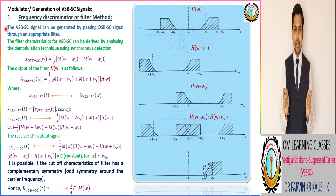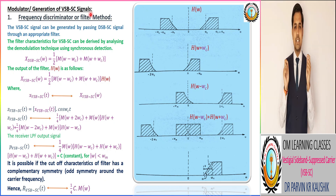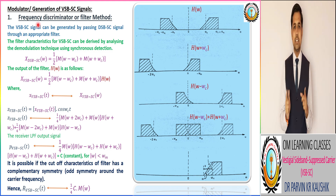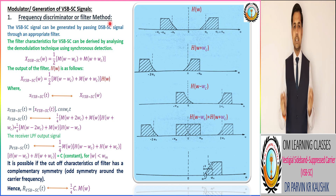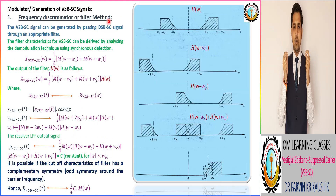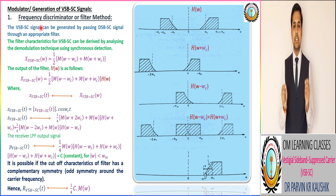Now we are going to discuss the modulator or generation of VSBSC signals. Similar to DSBSC modulation technique, we also have two types of modulators in VSBSC. The first is the frequency discriminator or filter method, and the second is the phase discriminator or phase method.